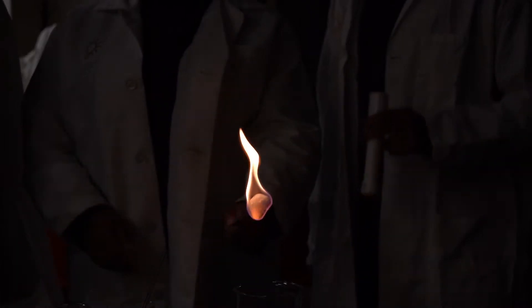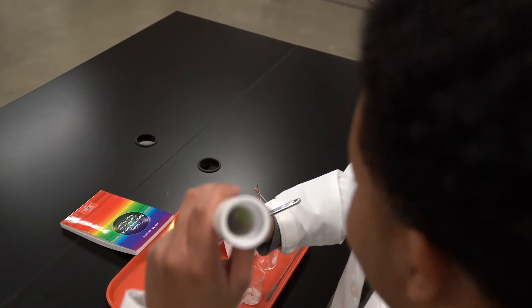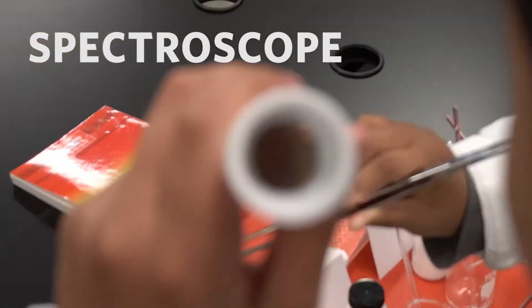The flame might appear the same color for each chemical, but by looking through a tool called a spectroscope, you can see how each element gives off distinctive colors.